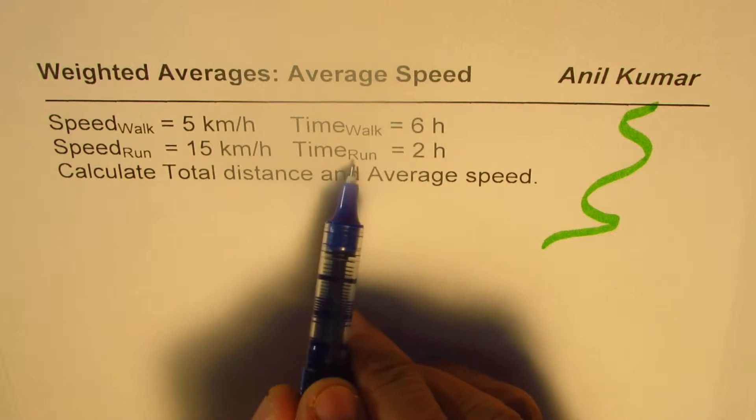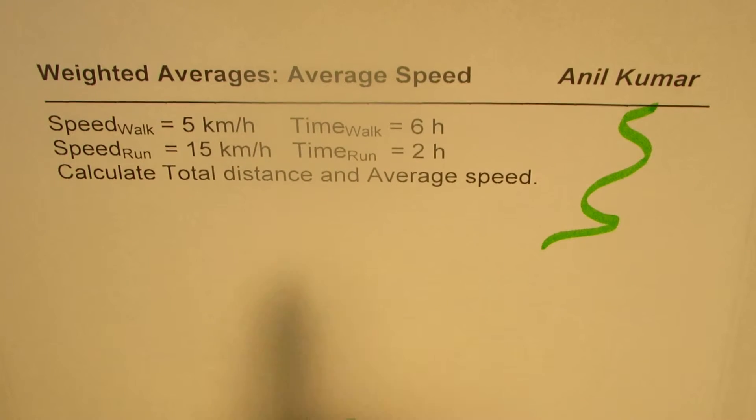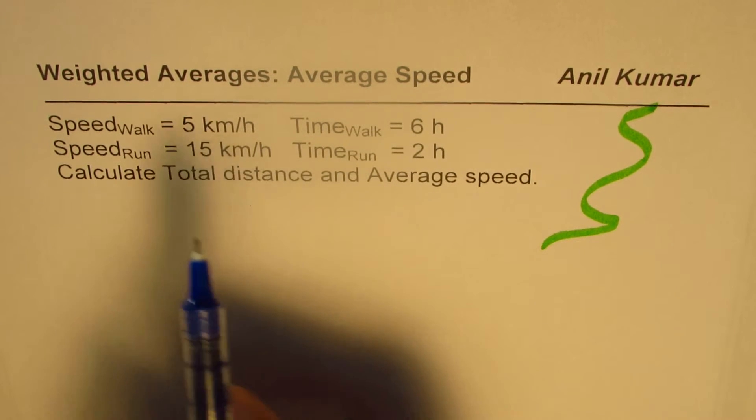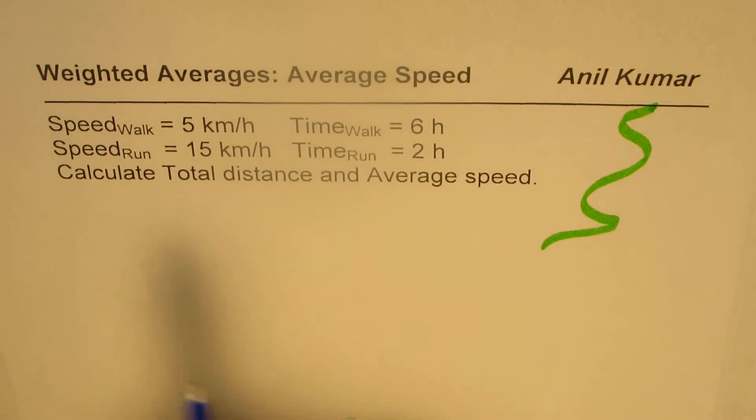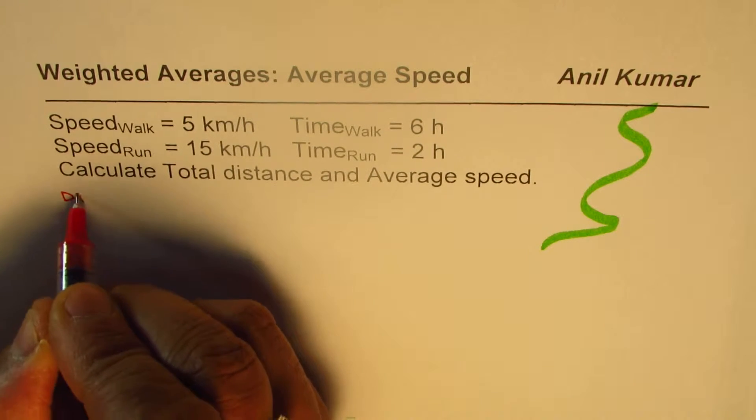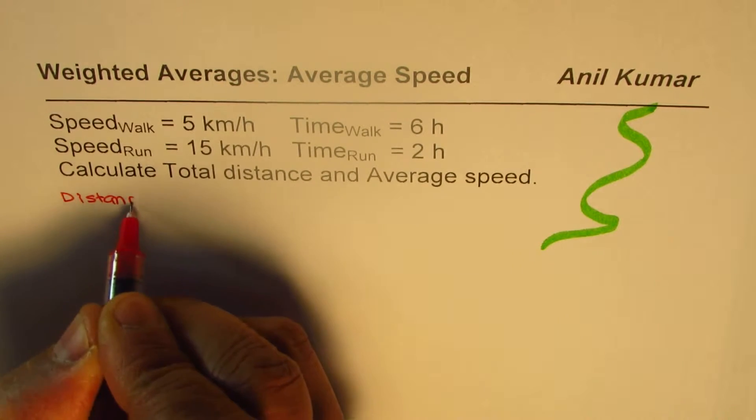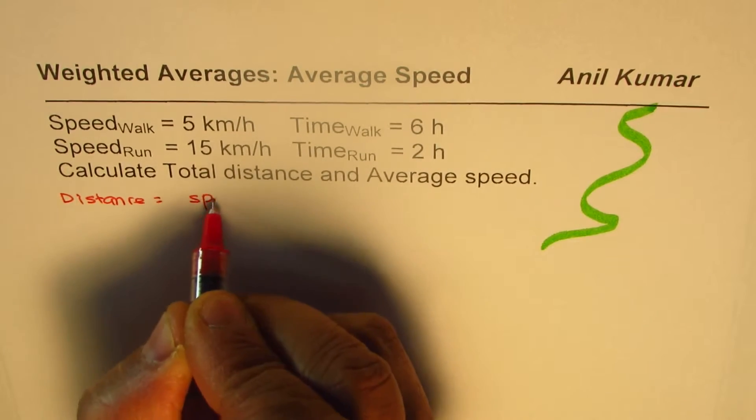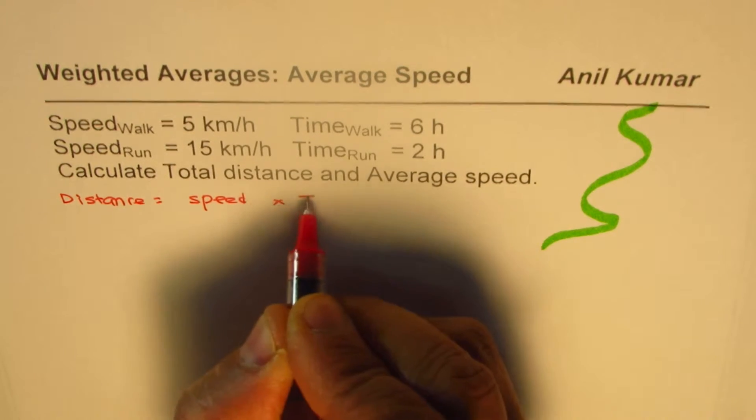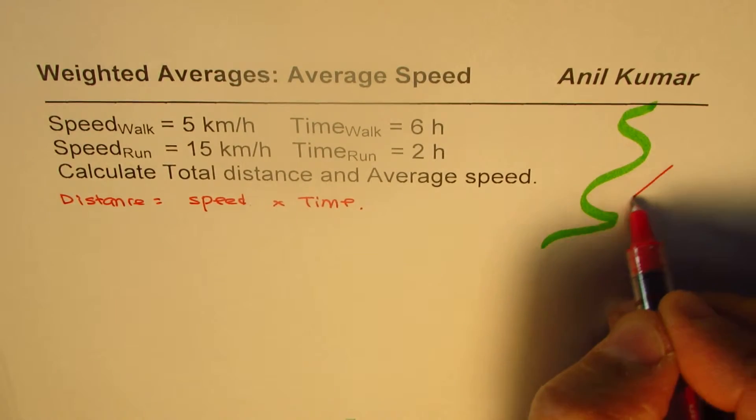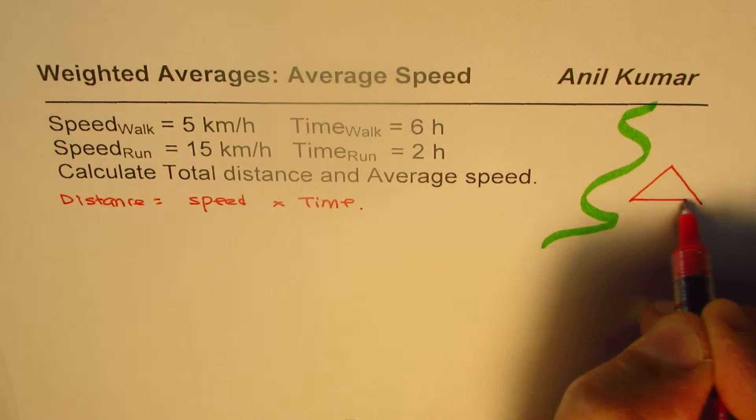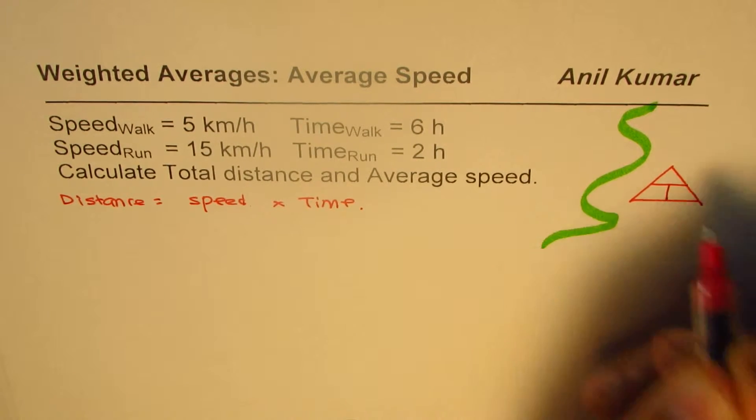To find the distance, we can find the product of speed and time. Distance, as you know, is speed times time. Let me just sketch a triangle here to remind you about their relation, which is distance equals speed times time.